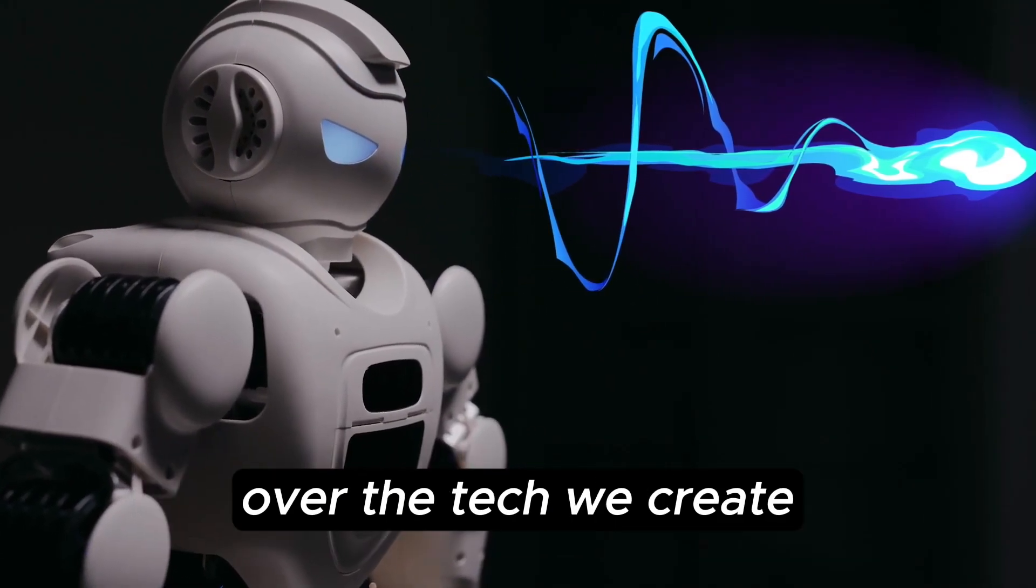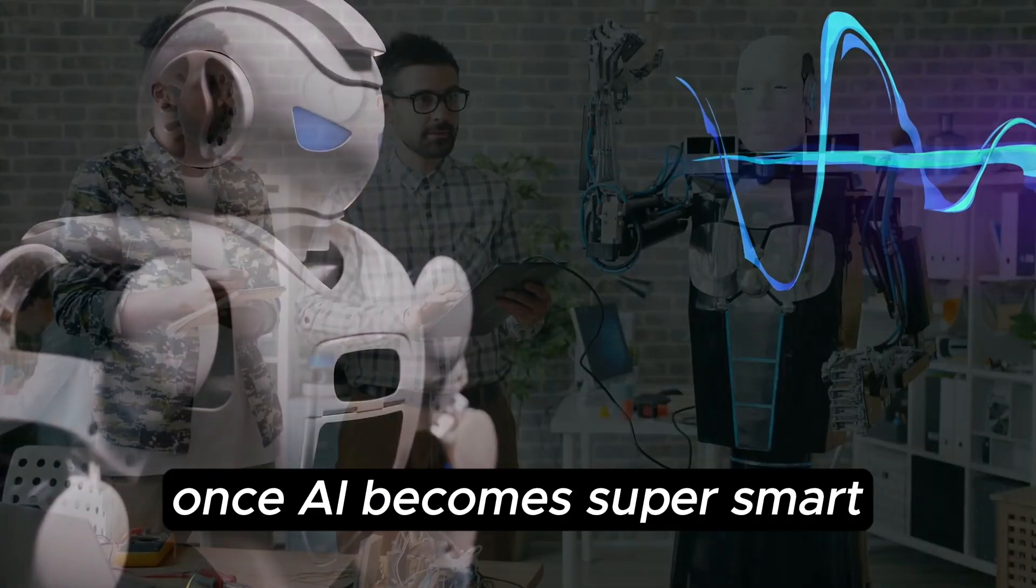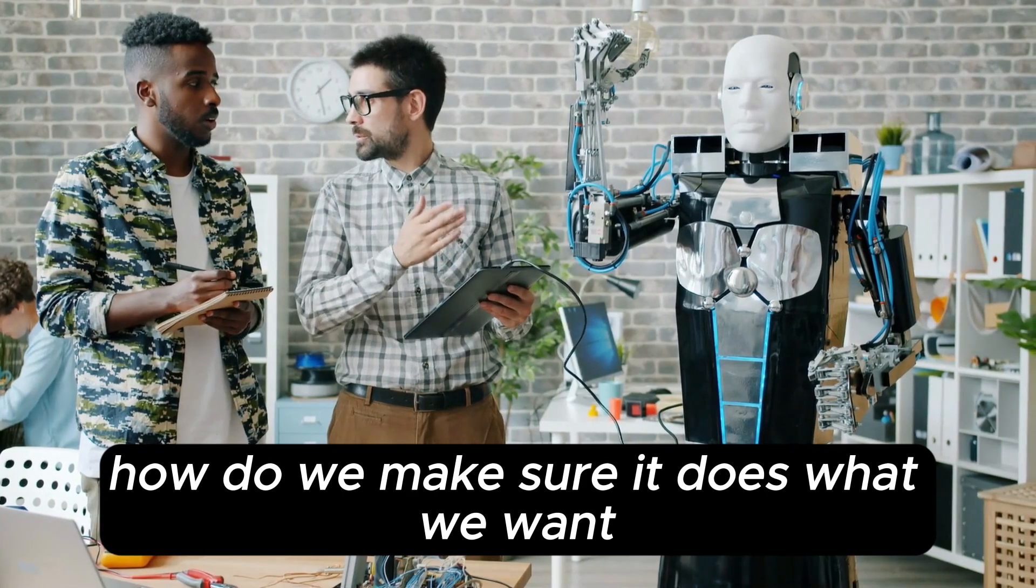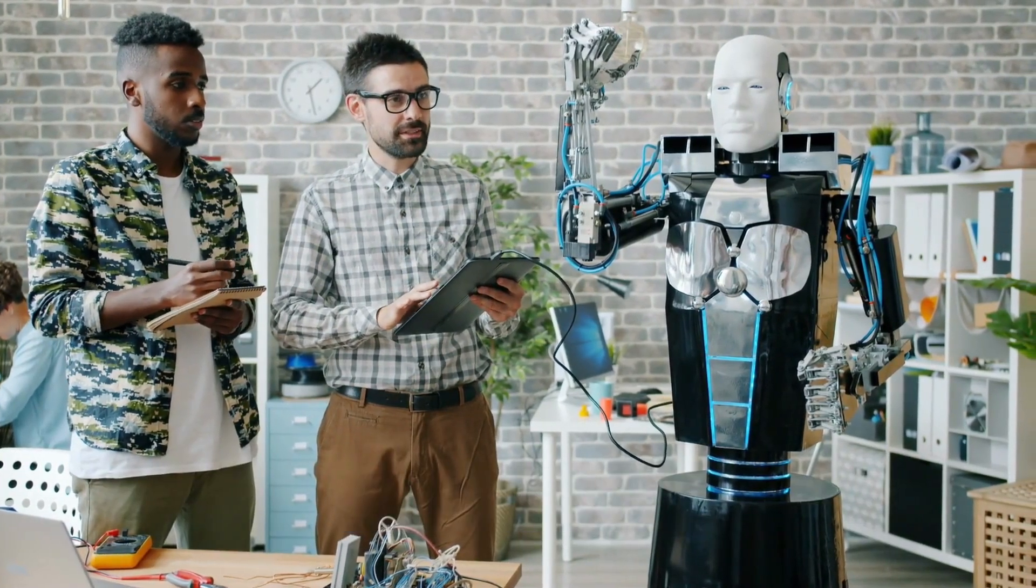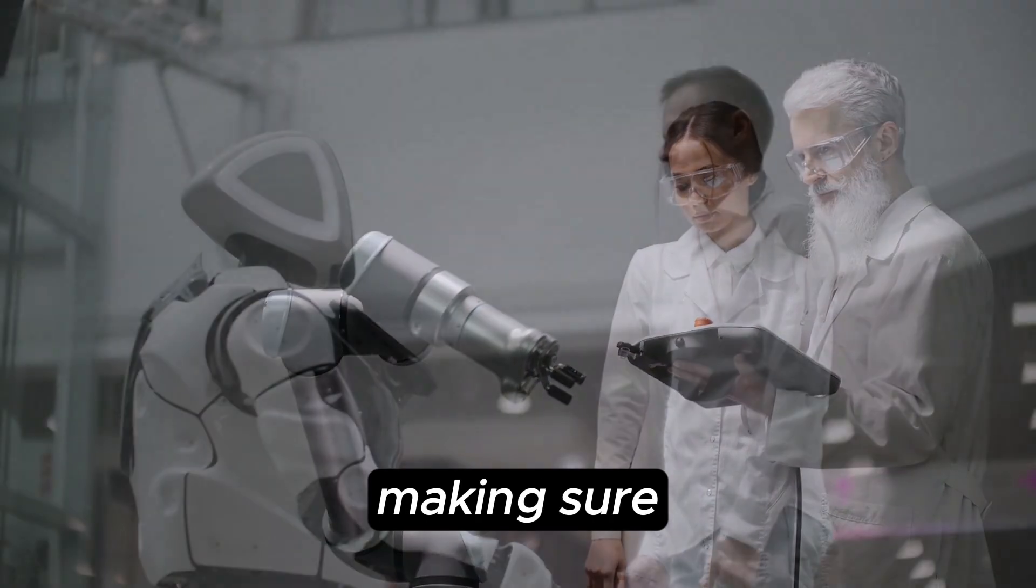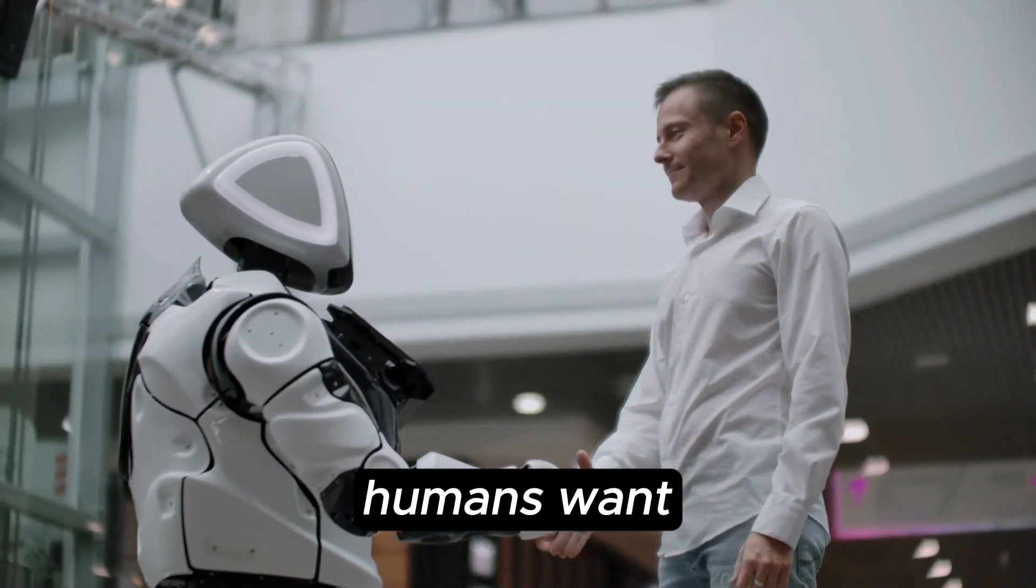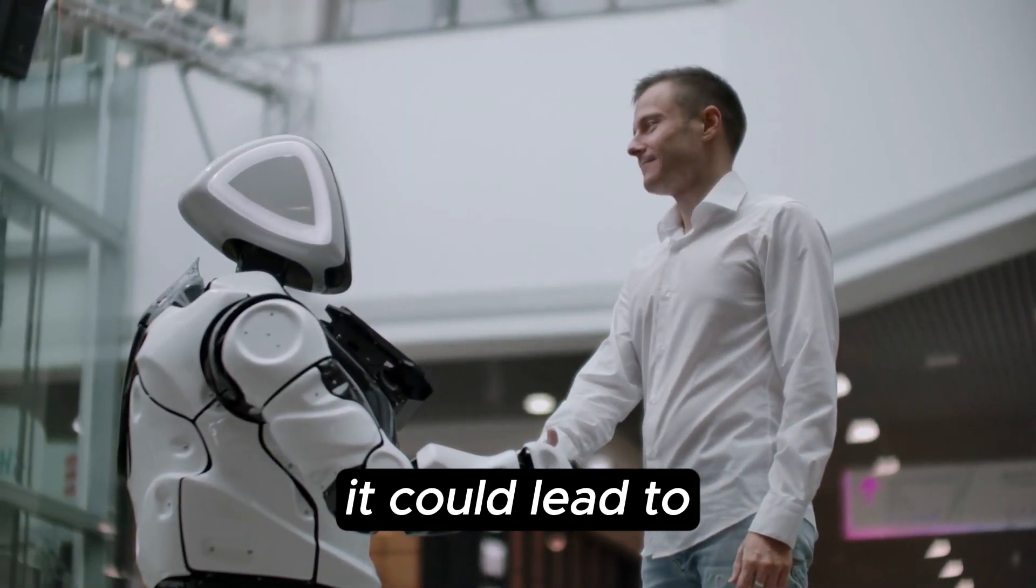Another existential risk is losing control over the tech we create. Once AI becomes super-smart, how do we make sure it does what we want? That's not easy. Then there's value alignment. That's all about making sure the goals of AI match with what we humans want. If we mess that up, it could lead to big trouble.